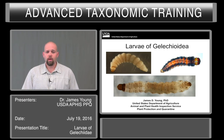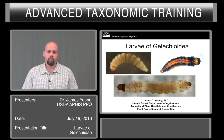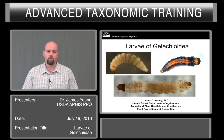It's estimated that about 18,000 species are known at this time. Dr. Hodges of SEL estimated at one point that this could represent as little as 25% of the actual number of species in this group.